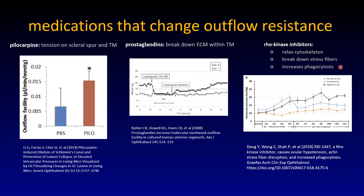Rho kinase inhibitors — a more recent addition to our glaucoma medication portfolio. They relax the cytoskeleton, break down stress fibers, and increase phagocytosis. One side effect in particular is eye reddening in many patients. The pressure reduction is probably a little less than what one would get with timolol, a beta blocker that reduces aqueous production. But this is a very interesting class of medications that works in a completely different way.